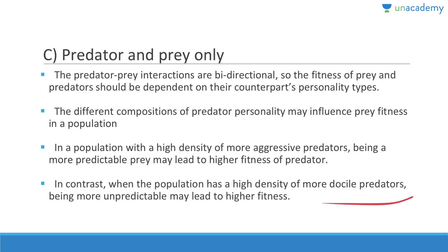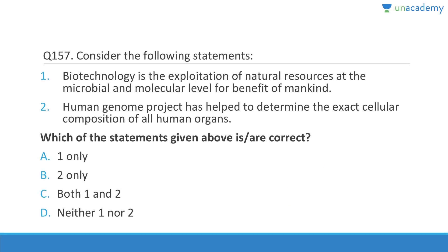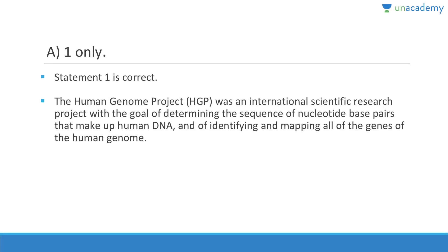Biotechnology is the exploitation of natural resources at the microbial and molecular level for the benefit of mankind — that is correct. The human genome project helped determine the nucleotide sequence that makes up human DNA — not the exact cellular composition of all human organs; that statement is wrong.